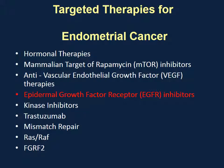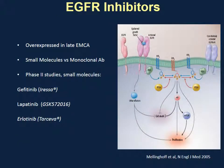Next would be epidermal growth factor receptors — receptors on the surface of the cell that affect growth. We have inhibitors of these, which are overexpressed often in late endometrial cancers. These inhibitors are small molecules, and there are good Phase II studies indicating some activity. They include gefitinib, lapatinib, and erlotinib or Tarceva, and these agents show some activity in endometrial cancer treatment.